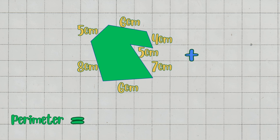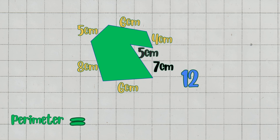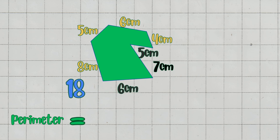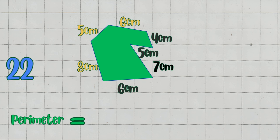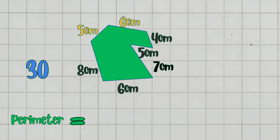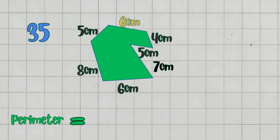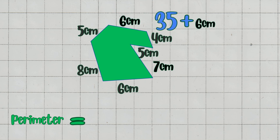To find the perimeter, we simply add up the lengths of all the sides. Add the first two sides: 5 cm plus 7 cm equals 12 cm. Add the third side: 12 cm plus 6 cm equals 18 cm. Add the fourth side: 18 cm plus 4 cm equals 22 cm. Add the fifth side: 22 cm plus 8 cm equals 30 cm. Add the sixth side: 30 cm plus 5 cm equals 35 cm.